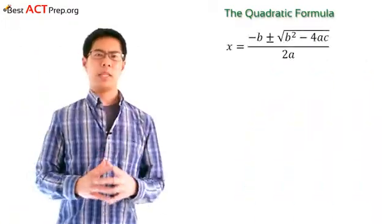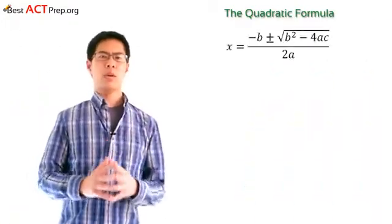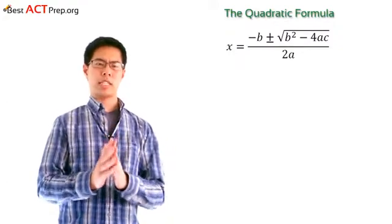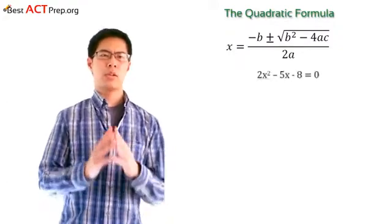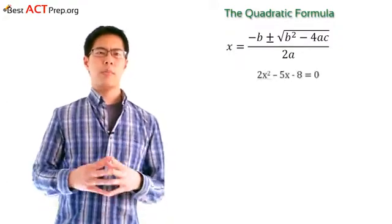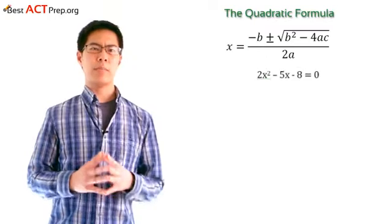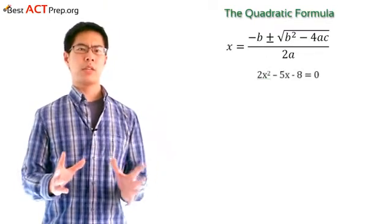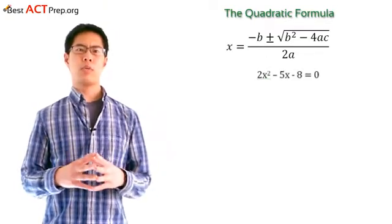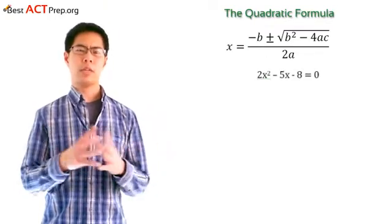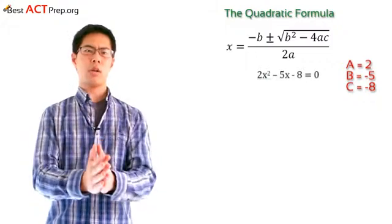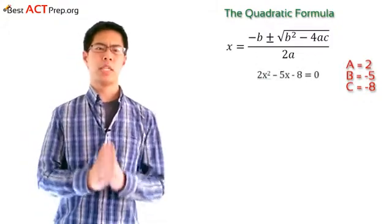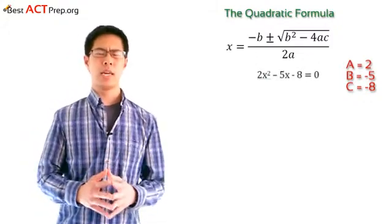Now let's try one more example, one that doesn't work out quite so nicely. Take a look at this example right here: 2x squared minus 5x minus 8 equals 0. We can't factor this, so let's use the formula to solve it. Our a is going to be 2, our b is going to be negative 5, and our c will be negative 8.